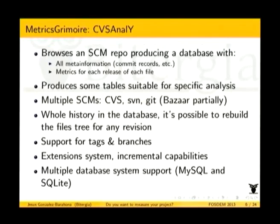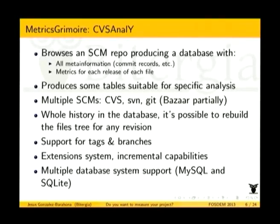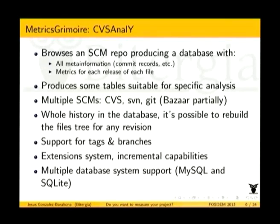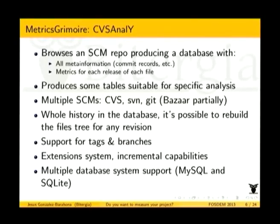CVSAnaly is the older tool. Basically it goes through the source code management repository — the Git repository, the Subversion repository — and gets all the meta information: the commit records, who made the commit, when it was made, the commit comment, and it can also get metrics for every revision of every file. That means we run some tools that calculate those metrics, so you can know things like the McCabe complexity or the size of the file for all the history of that file. This produces tables you can then query — for example, commits per month for the whole project — or much more complex things.